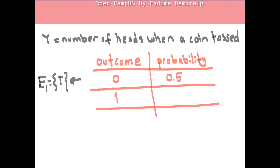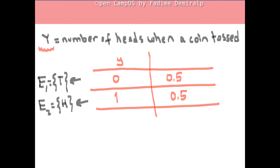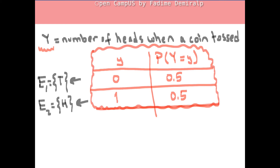One heads when one coin is tossed — again, one outcome in the event — so the corresponding probability is again 1 divided by 2, which is 0.5. Since our variable is denoted by capital Y, the notation for the outcome is lowercase y. The notation for the probability will be: probability that the random variable capital Y takes the value lowercase y. We have obtained the probability distribution of the discrete random variable Y. In general, the probability distribution of a discrete random variable is the list of all possible outcomes of the variable and the probability that each outcome will happen.